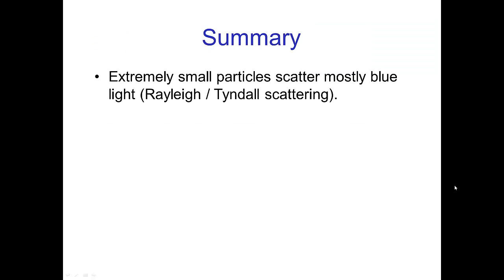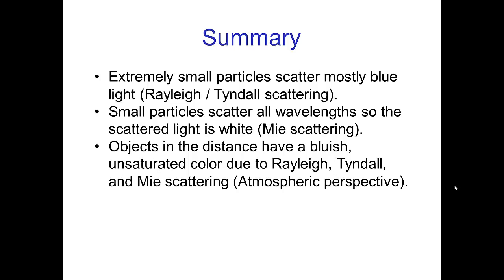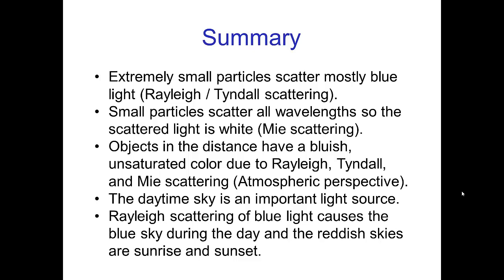In summary: extremely small particles scatter mostly blue light — this is known as Rayleigh or Tyndall scattering. Small particles scatter all wavelengths, so the scattered light looks white — this is Mie scattering. Objects in the distance have a bluish, unsaturated color due to Rayleigh, Tyndall, and Mie scattering — this is atmospheric perspective. Underwater or in space the effects are somewhat different. The daytime sky is an important light source, perhaps not fully appreciated. Rayleigh scattering of blue light causes the blue sky during the day, and the reddish skies we see at sunrise and sunset. We'll see more about scattering in part two.